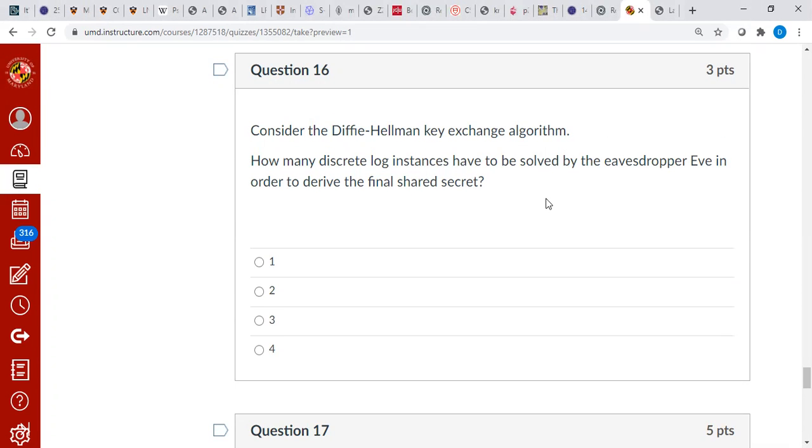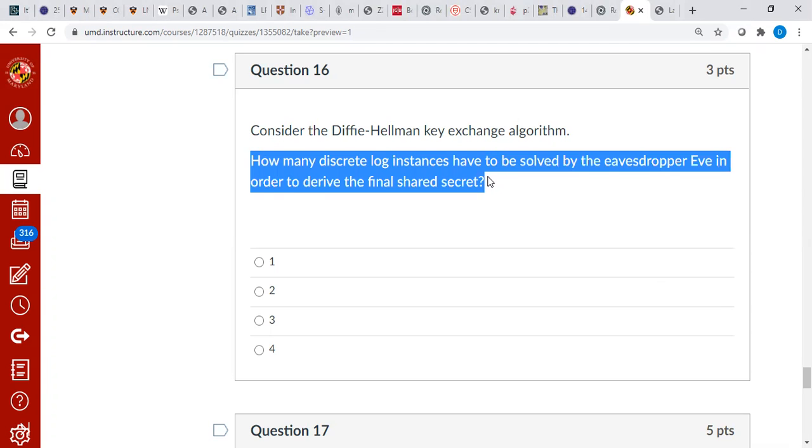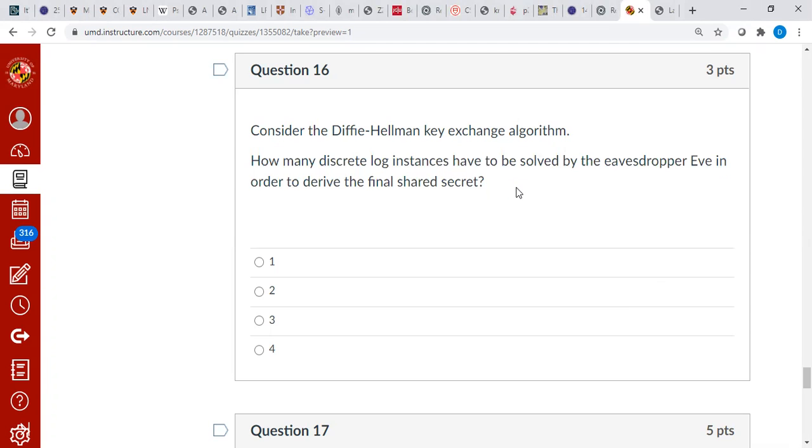So the first problem is, consider the Diffie-Hellman key exchange algorithm which we talked about a lot throughout this video series. Many discussions were about DH key exchange. How many discrete logarithm instances have to be solved by eavesdropper Eve in order to derive the final shared secret? So we are asked to select one answer out of the four possible answers.